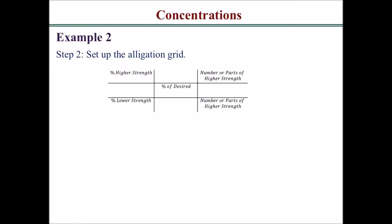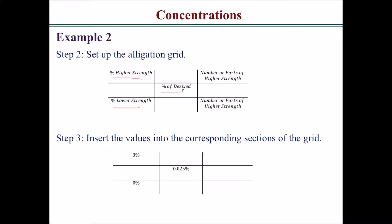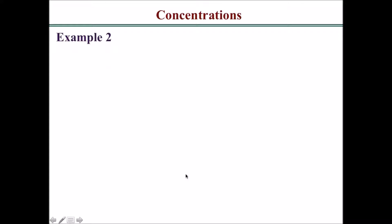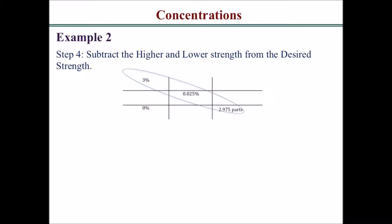Next, set up the alligation grid with the higher strength percent on the top left, the lower strength on the bottom left, and the desired percent in the middle. Insert the values: 3% for the dopamine hydrochloride, 0% for the sodium chloride diluent, and the desired 0.025% in the middle. Subtract: 3% minus 0.025% equals 2.975 parts; and 0% minus 0.025% gives an absolute value of 0.025 parts. Adding those together gives 3 parts total, consisting of 0.025 parts of the 3% dopamine hydrochloride plus 2.975 parts of diluent.